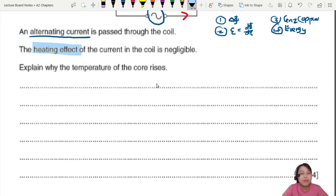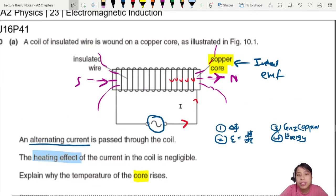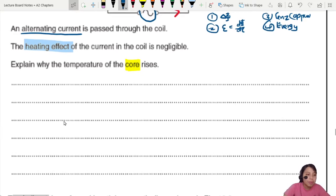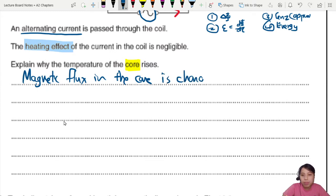Let's start. Change in flux. Is there a change in flux for the core? Now the main player is the core. We're talking about the core. Is there a change in flux in the core? Yes, there is. One moment there is a field through the core this way. Next moment there's a field through the core the other way. So yes, there is a change in flux. So we just need to mention that. So we say that the magnetic flux or phi in the core, you can say magnetic flux linkage or flux, is changing. That's the first thing.